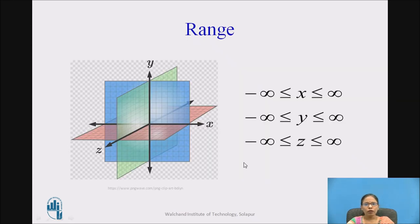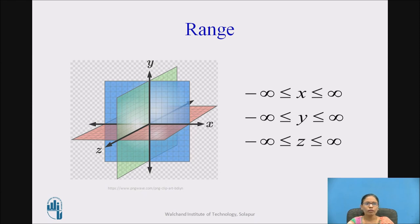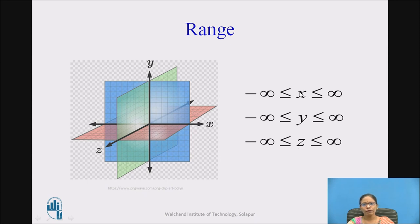Ranges of coordinates x, y, and z. The value of x can range from minus infinity to plus infinity. Similarly, the range for y is from minus infinity to plus infinity, and the range for z is also from minus infinity to plus infinity. So for all coordinates in the Cartesian coordinate system, the range is from −∞ to +∞.